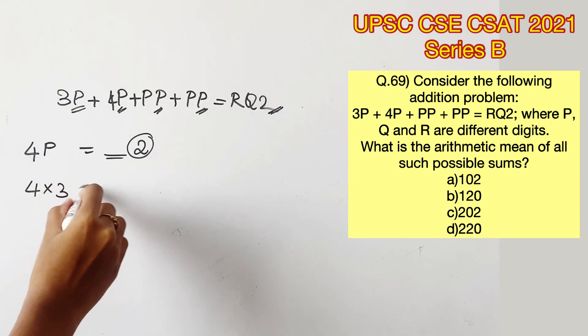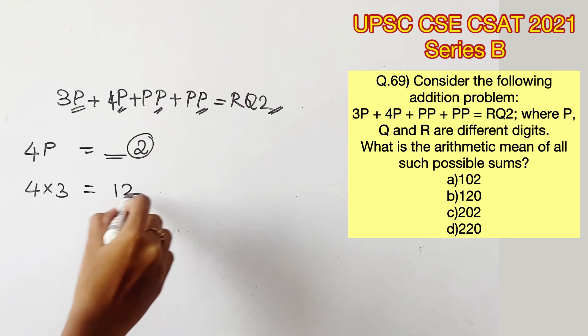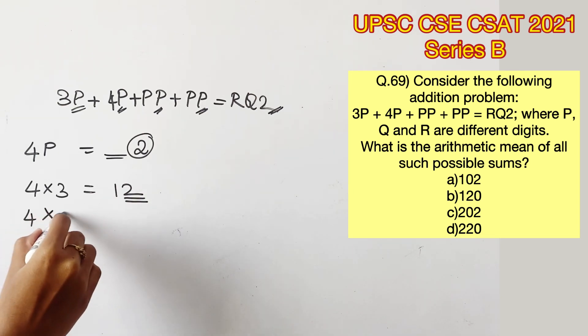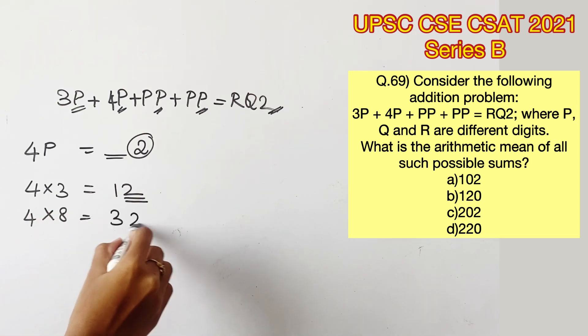If you try and substitute all the digits in the place of P from 0 to 9, only 2 digits will follow this pattern. 4 times 3 is 12 and 4 times 8 is 32. Any other digit multiplied with 4 will not give 2 in its unit's place.